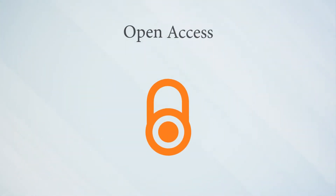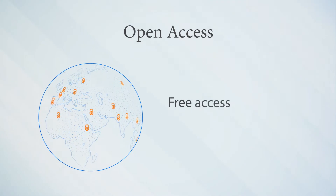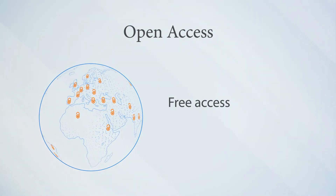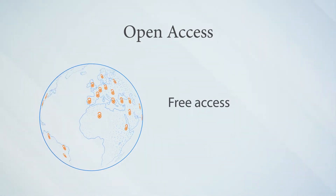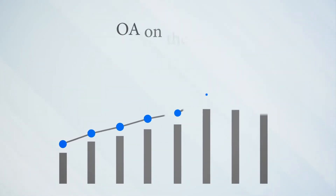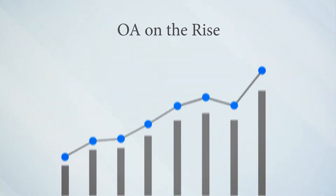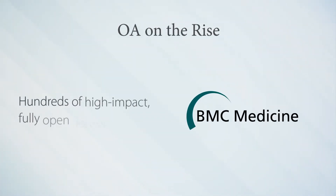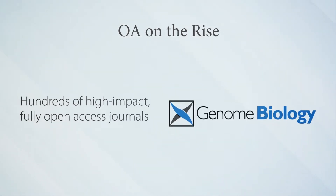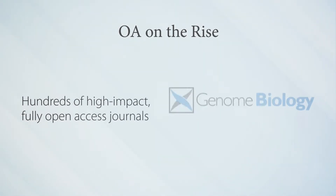Open access is a way to publish research so that anyone in the world can have access to it for free. It's also a way for authors to maximize the reach and impact of their work. Today, open access publications are on the rise worldwide, with hundreds of high-impact, fully open access journals under Springer Open and BioMed Central.